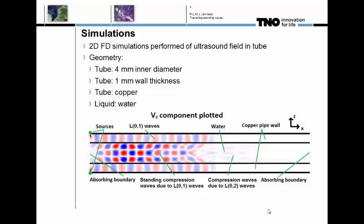I'm going to use a snapshot of one of our simulations to explain what happens in the pipe. We have a copper tube with walls of about one millimeter thick and an inner diameter of about four millimeters, with water as the liquid inside. We're exciting waves using sources on the edges. You can see an L01 guided wave in the pipe, and in front of that, a little bit of L02 guided wave which goes faster. If you condition your problem correctly, the L01 guided wave refracts into the liquid to produce a radially standing wave field in the liquid, while the L02 wave does not fulfill the standing wave condition.